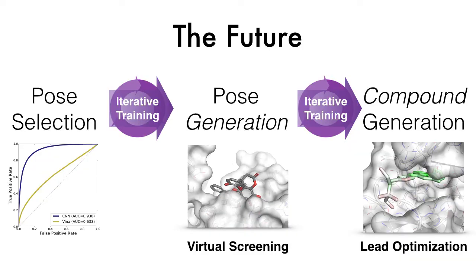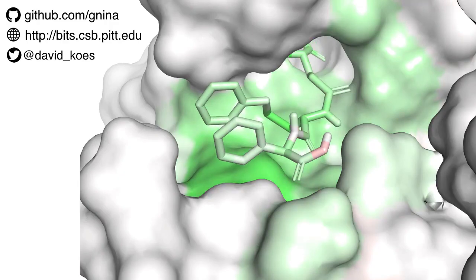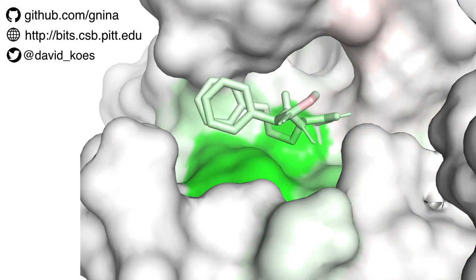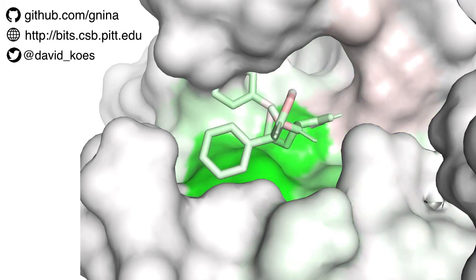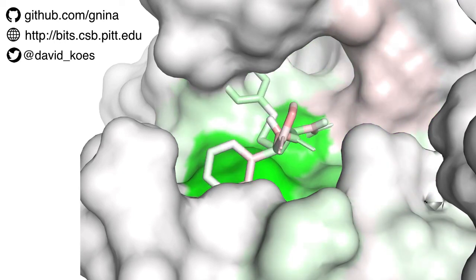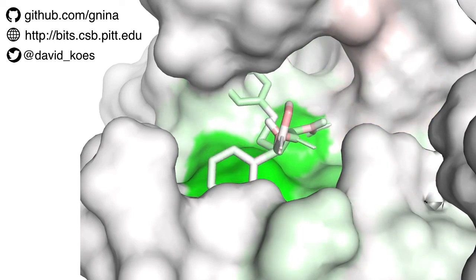The software we're developing, called Gnina, is completely open source and being developed in the open on GitHub.